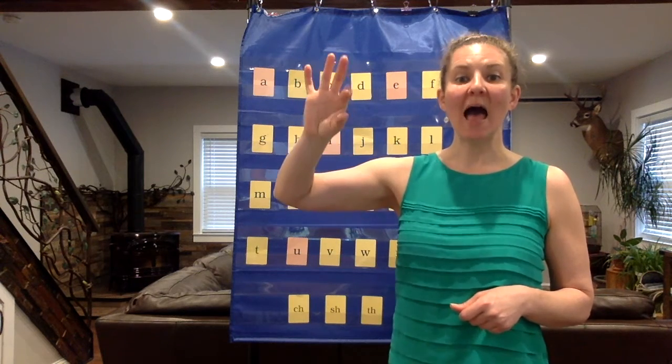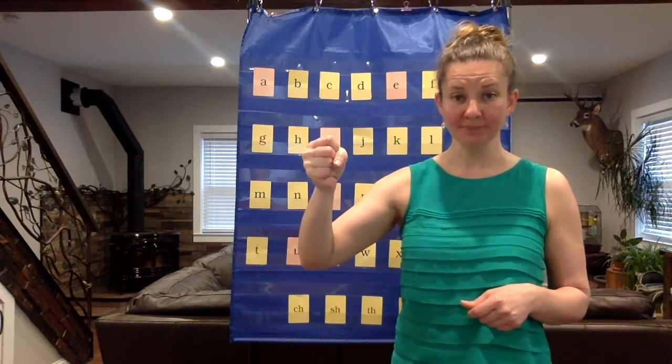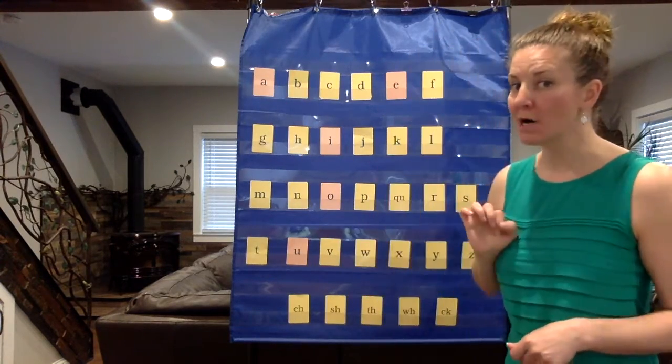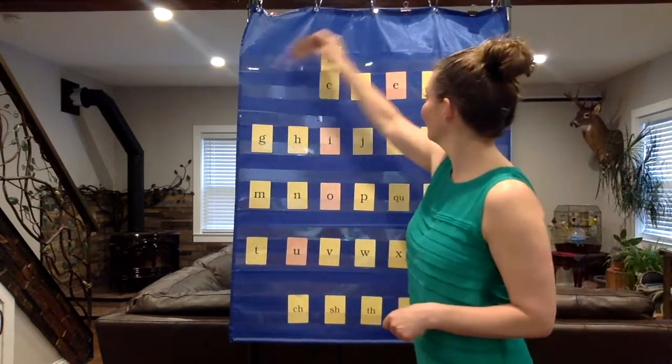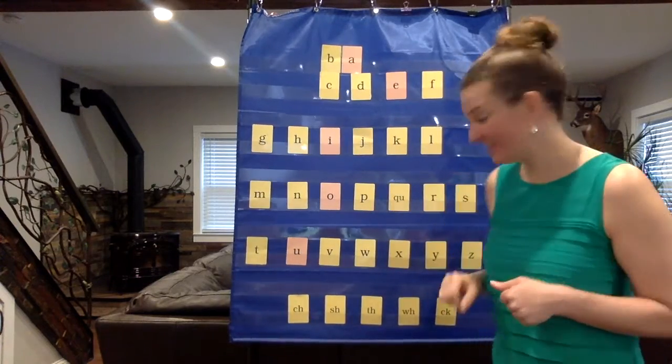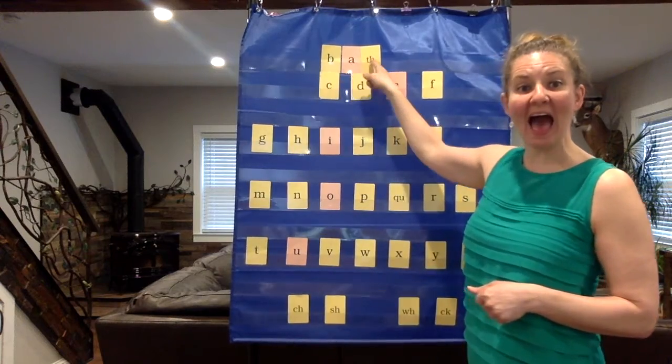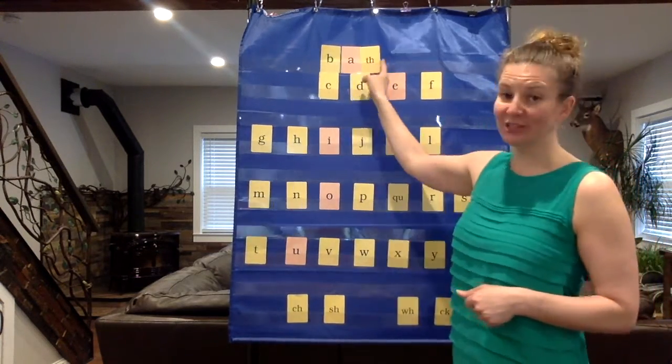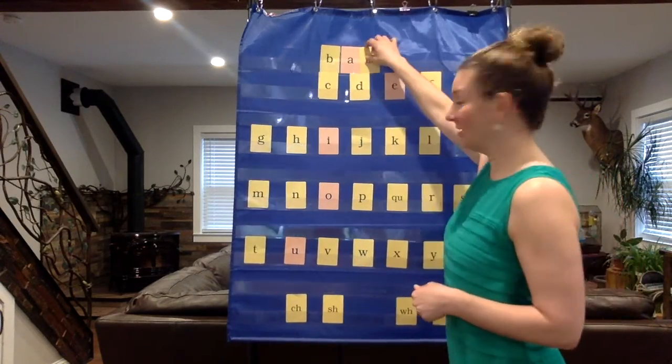B A TH Bath. All right, you write it. I'm gonna build it. B, A, TH. That's right. B A TH Bath. Did you remember to underline that consonant digraph? I hope so. Reset!